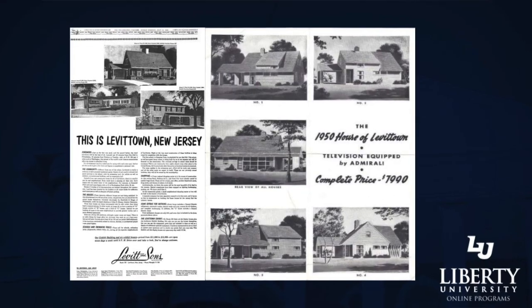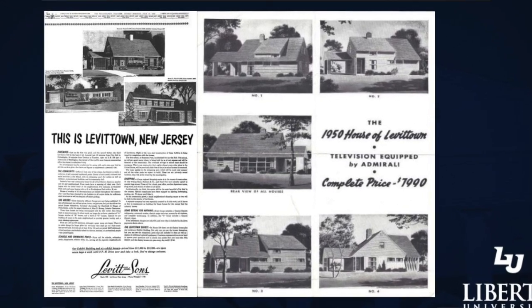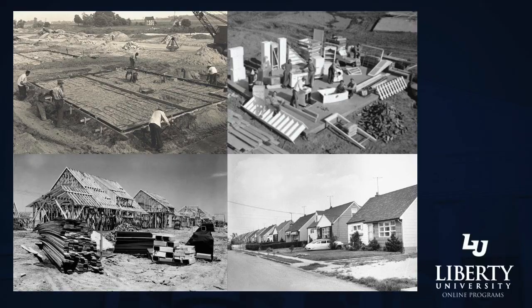His first successful housing development in the post-war era was located near Hampstead in Long Island, New York, and was given the name Levittown. In this construction, he was able to utilize various assembly line and mass production construction methods to create these new suburban communities. Lots of homes were created initially according to a plan in which he had laid out a noted 27-step system of production.